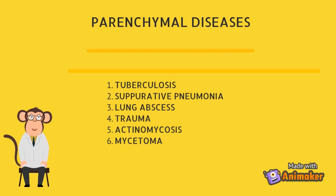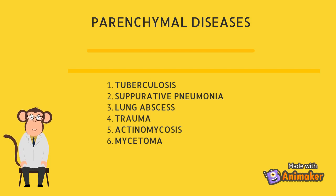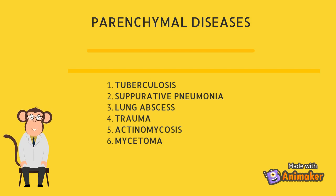In tuberculosis, cavitation is frequently the source of bleeding, but rarer complications such as erosion of a pulmonary artery aneurysm into the cavity can also be the cause. Streptococcus pneumoniae can cause bacterial superinfection in patients with chronic bronchitis. Organisms such as Staphylococcus aureus and Klebsiella pneumoniae can cause lung abscess and necrotizing pneumonia by devitalizing the lung parenchyma. Aspergillus species can develop into a mycetoma in pre-existing cavities and cause erosion leading to bleeding.